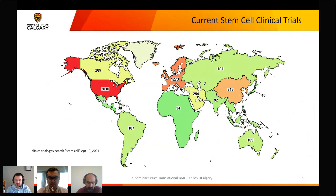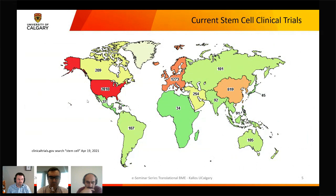Looking at clinicaltrials.gov, if you search the word 'stem cells' you can see a large number of trials in the US, Europe, and China. This number is down during COVID — it was about 7,000 total a couple years ago, now around 5,000. I think people are focusing more on COVID strategies, but I expect it to go back up. This shows that this technology is here now and the demand is here now.